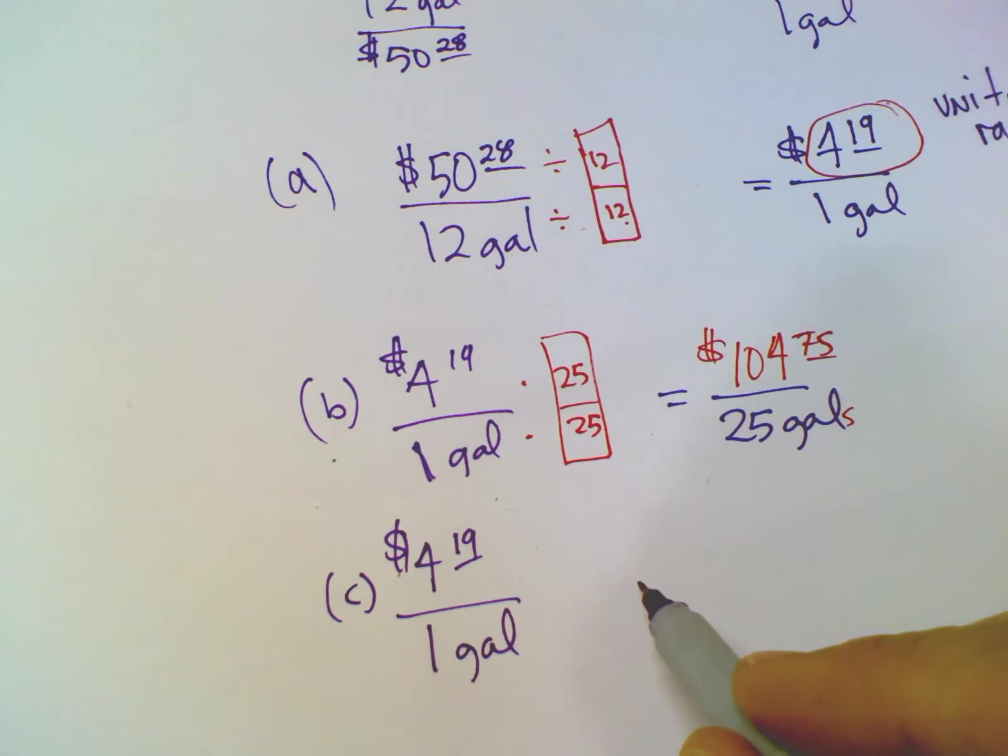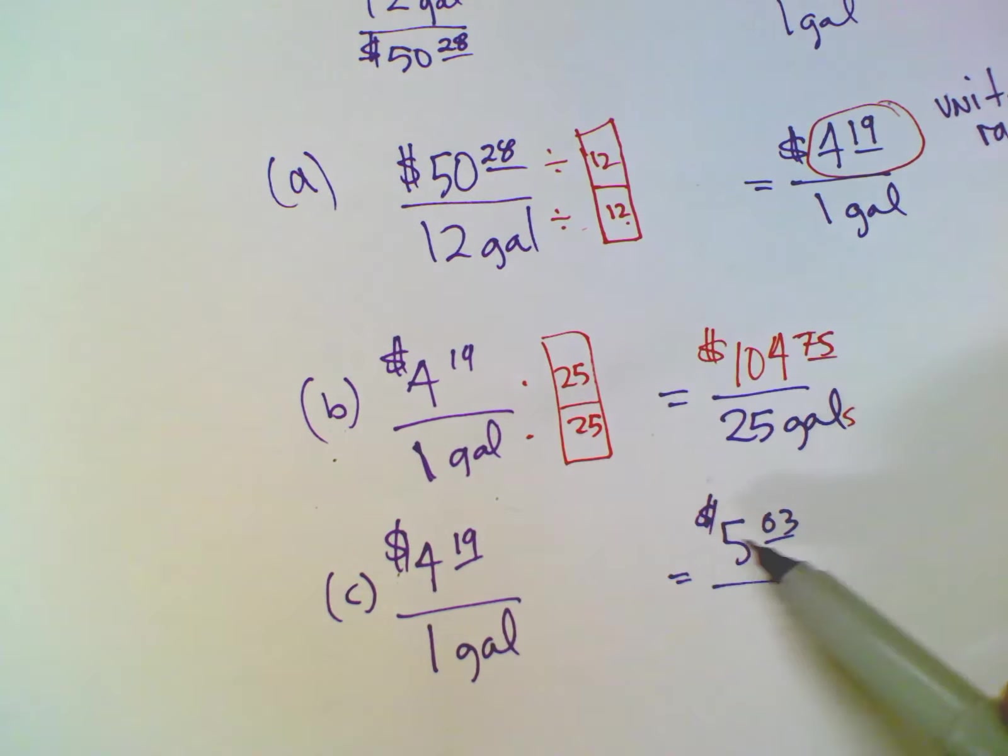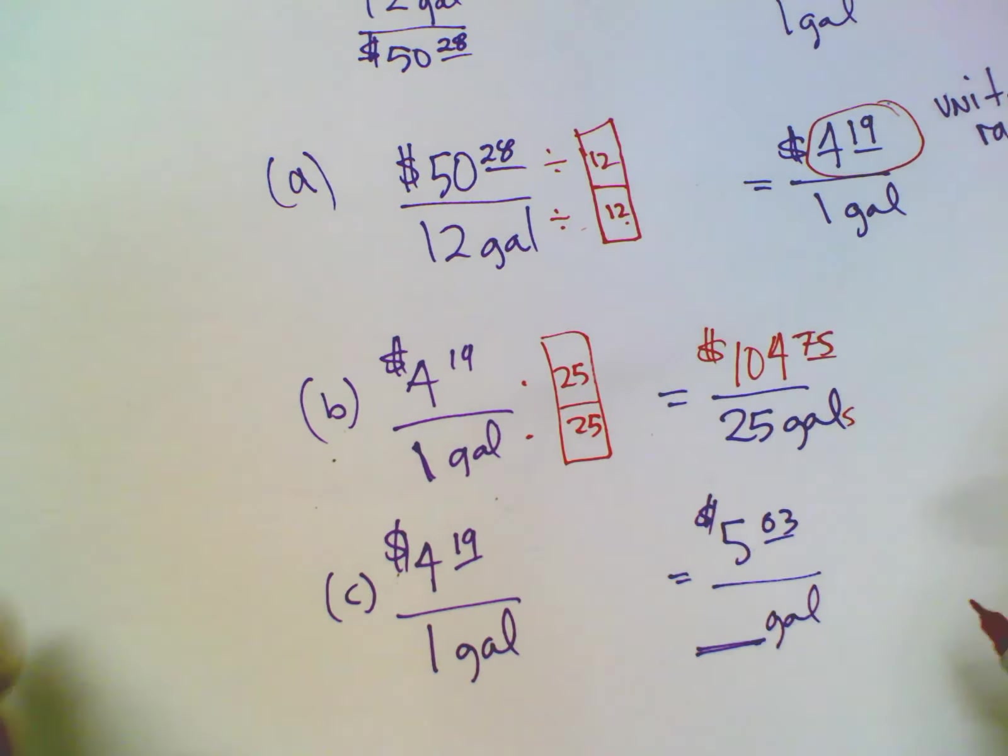And now he's filling up his moped. And what did it say? It said it only costs him $5 and 3 cents. And notice where I put this, I put it on top because I have money and money, your unit money needs to be on top. Cause that's where your unit rate is. Where it's where money is for your unit rate. So the question is how many gallons now I'm figuring out how many gallons is that?